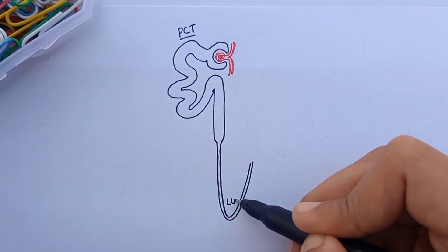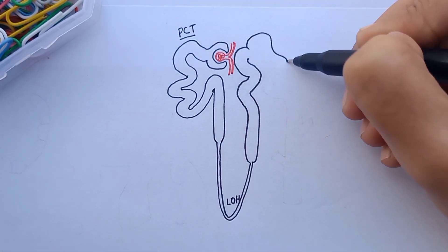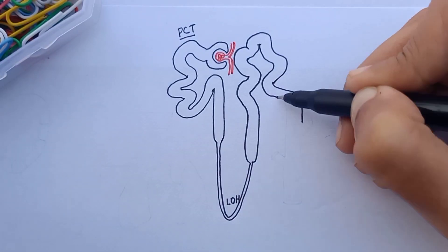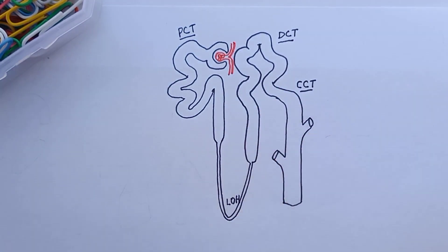Kidney is made up of a functional unit called nephron. Nephron tubules consist of the proximal convoluted tubule, the loop of Henle, the distal convoluted tubule, the cortical collecting tubule, and the collecting duct.